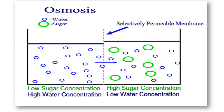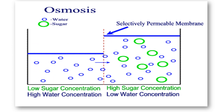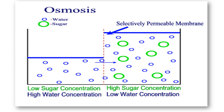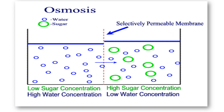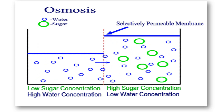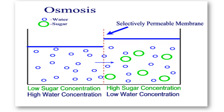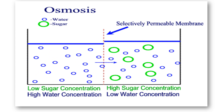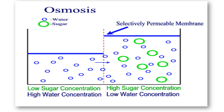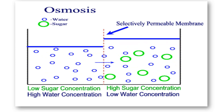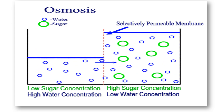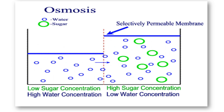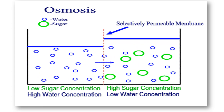As you can see in the animation, the blue circles represent water and the green represents sugar. From a higher sugar concentration side, the water from the lower sugar concentration side moves through the selectively permeable membrane. This illustrates how water moves across the membrane by osmosis.